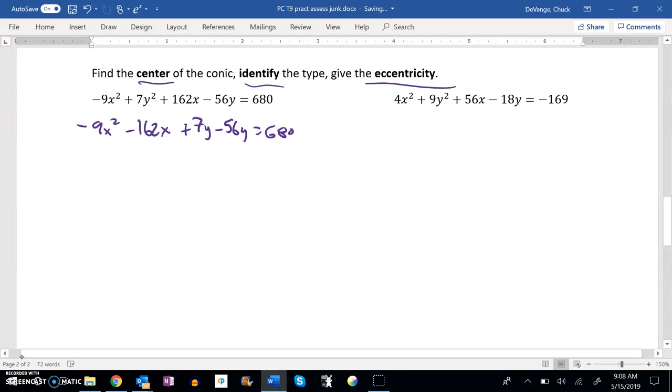So now I'm going to complete the square. On the x's, I'm going to factor out a negative 9. And if I do that, 162 divided by 9 is 18.